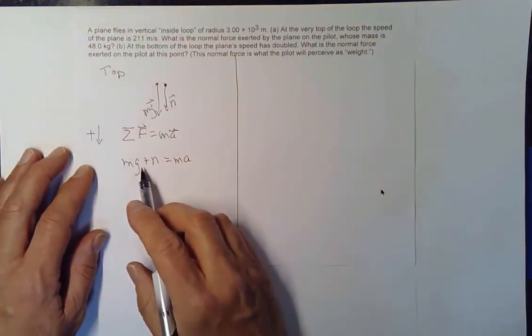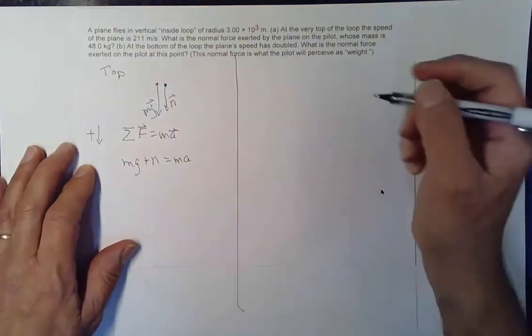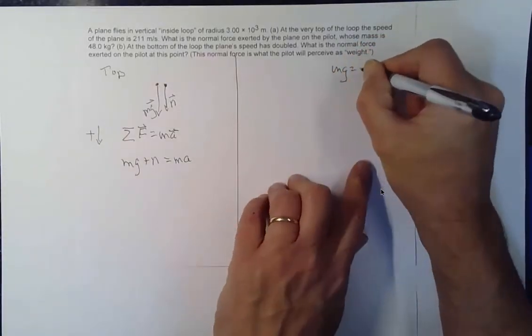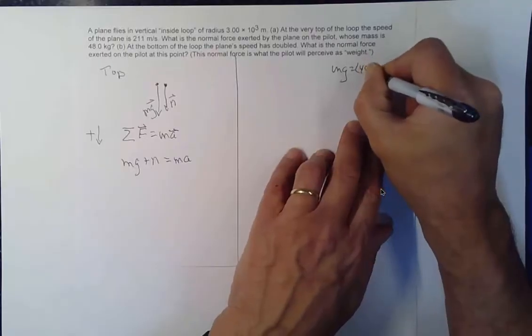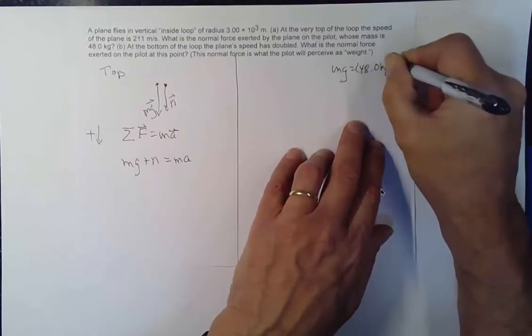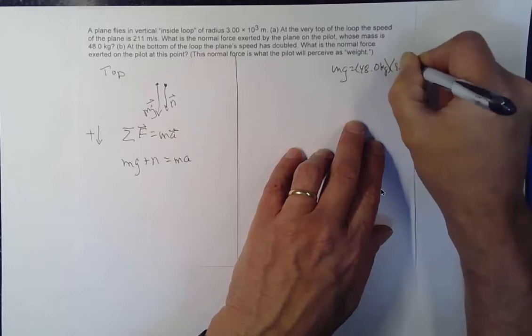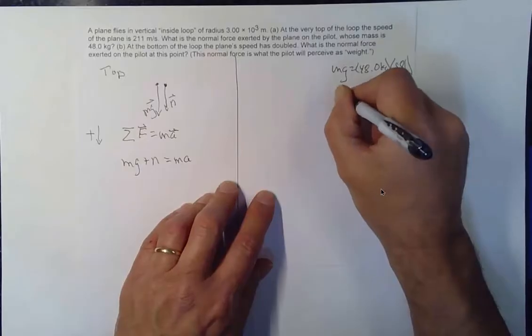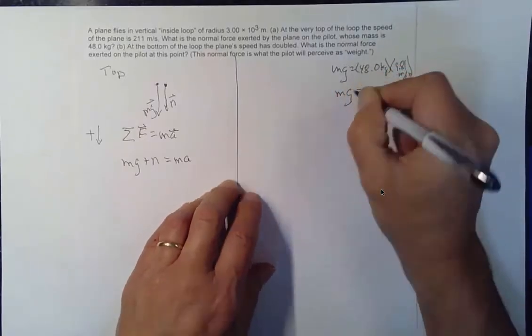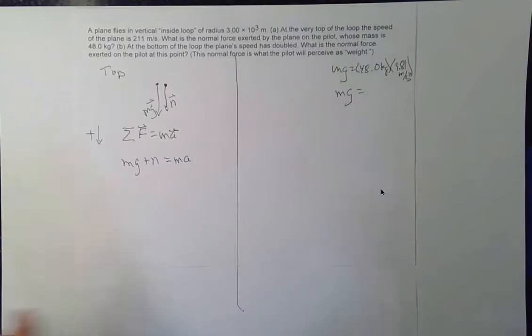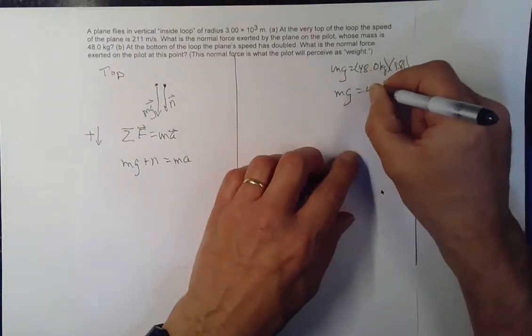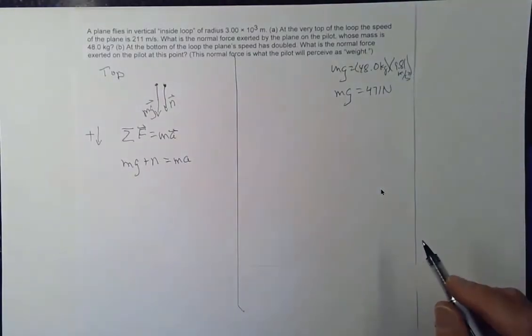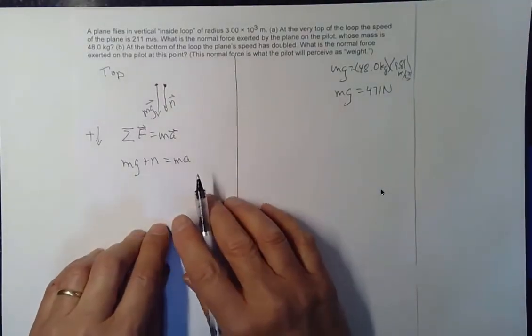And just for the heck of it, I'm going to calculate the weight of the pilot here. And it'll be the same in both situations. But MG is just going to be 48.0 kilograms times 9.81 meters per second squared. And the pilot's weight is 471 newtons. So that's handy to know. When we look at these normal forces, we'll be able to do that.